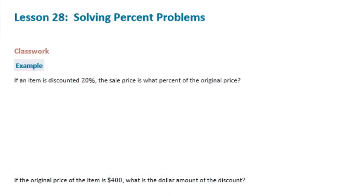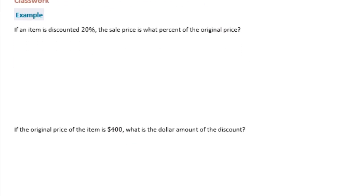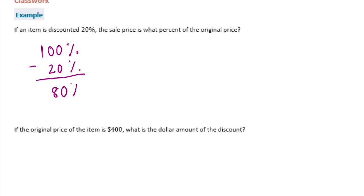Sixth grade, Module 1, Lesson 28 classwork example: if an item is discounted 20%, the sale price is what percent of the original price? If you set the whole as 100%, and it's discounted 20%, then what's left is 80%. So you're going to pay 80% of the original price.